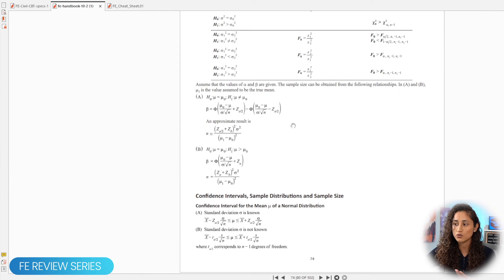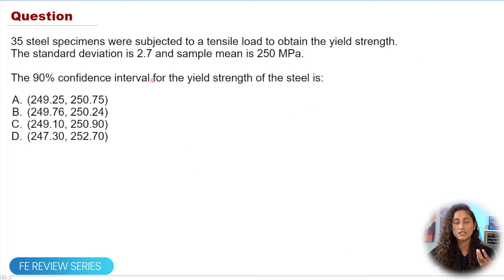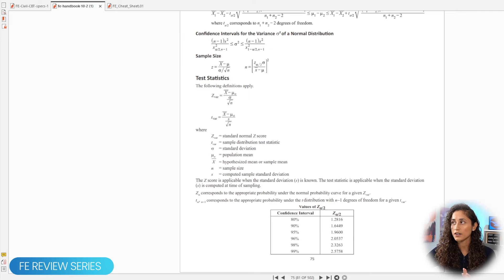So if you go back to the reference manual and we go to this page here, 75, you guys will see that, in the problem, we need to find the 90% confidence interval. So if we take a look at this table, the Z value or the Z alpha over 2 value, it's going to be this value here because it corresponds to the 90% confidence interval. So now let's write the equation down and then just start plugging the numbers.